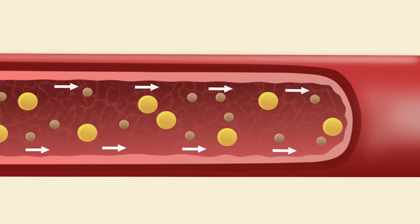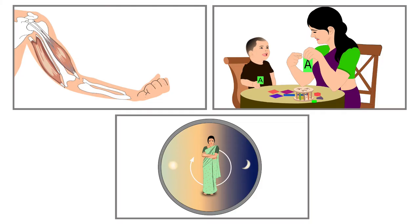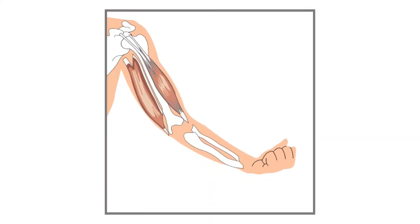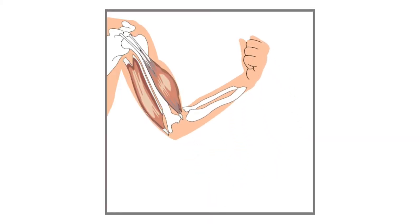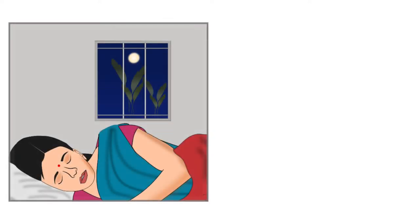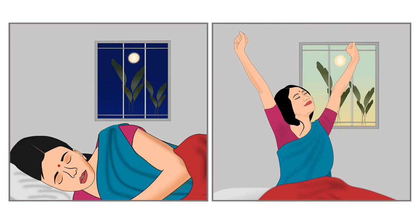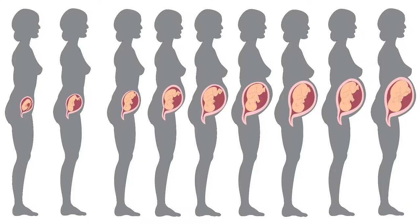Transportation of fat and cholesterol also requires choline. It is involved in muscle control, memory, and circadian rhythm. Circadian rhythm is a process that regulates our sleep and waking up cycle.